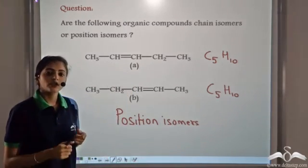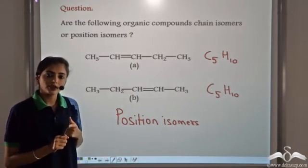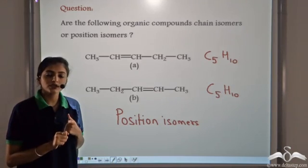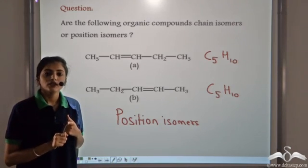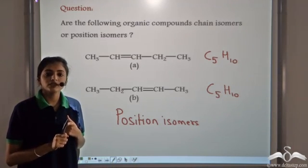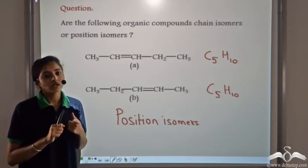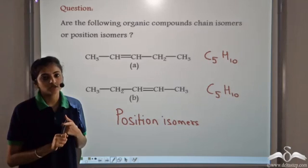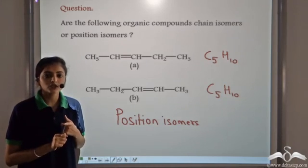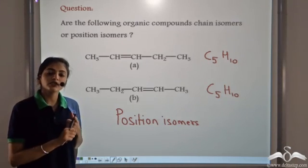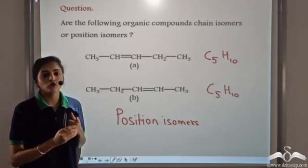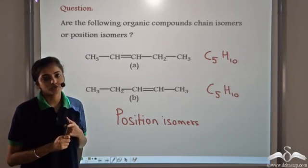So there are two types of isomers: chain isomers, in which there is a difference in the arrangement of carbon atoms, and position isomers, in which there is a difference in the position of the functional groups.